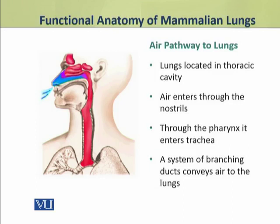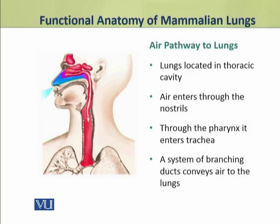Air enters through the nostrils, then passing through the pharynx, it enters the trachea. Beyond the trachea, a system of branching ducts conveys air to the interior of the lungs.